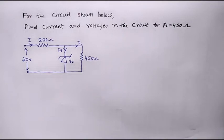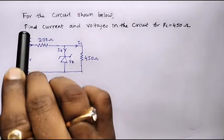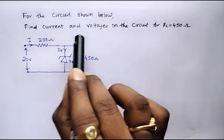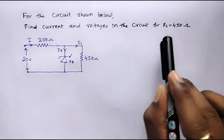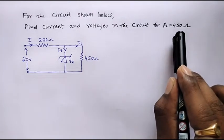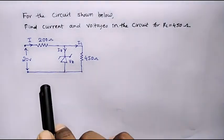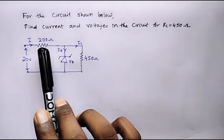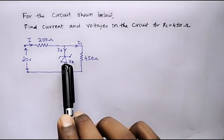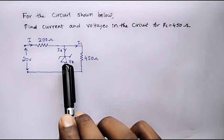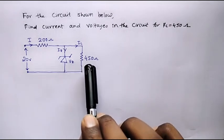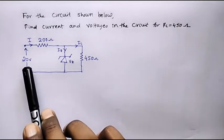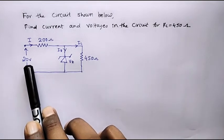Let's take an example on Zener diode. For the circuit shown below, find current and voltages in the circuit for RL equal to 450 ohms. This is the given circuit where the series resistance R is 200 ohms. The Zener diode is connected in parallel with the load resistor of 450 ohms. The supply voltage is 20 volts.